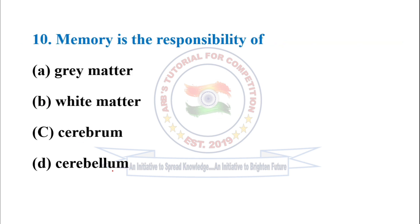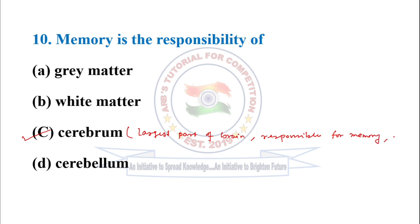Next question: memory is the responsibility of? The answer is cerebrum — option C is correct. The cerebrum is the largest part of the brain, responsible for memory, speech, senses, and emotional response. So option C is correct — cerebrum.